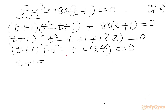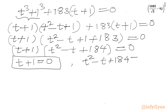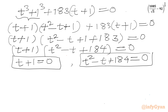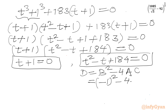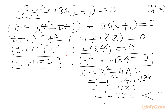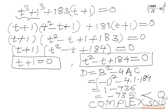So we conclude either t plus 1 equals 0, or t squared minus t plus 184 equals 0. I will check the discriminant of the quadratic: b squared minus 4ac equals (negative 1) squared minus 4 times 1 times 184, which gives 1 minus 736, equal to negative 735. Since the discriminant is negative, we get only complex solutions, so we reject this quadratic. Therefore t plus 1 equals 0, giving t equals negative 1.